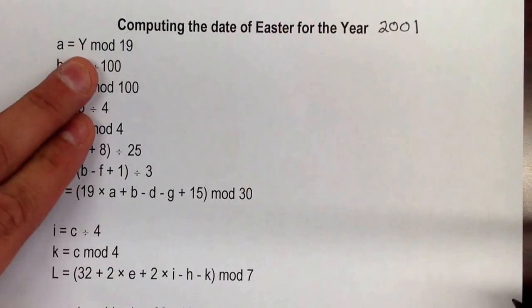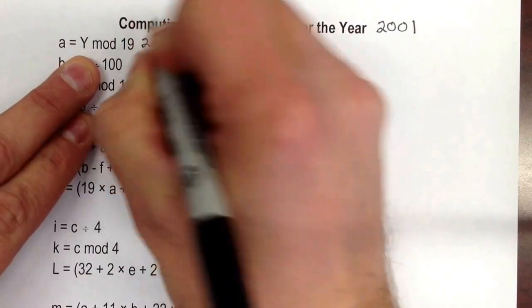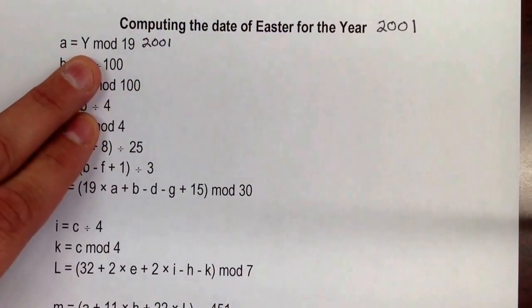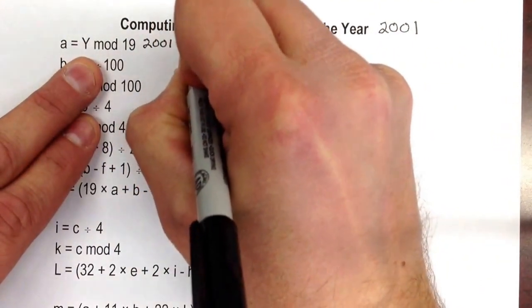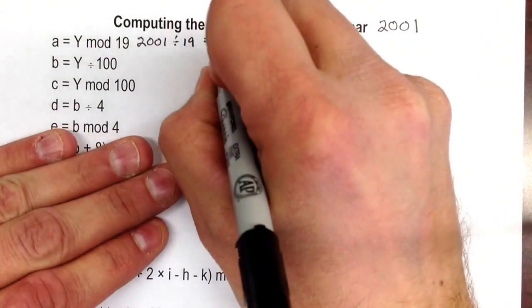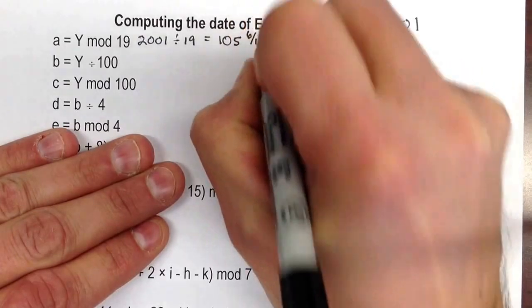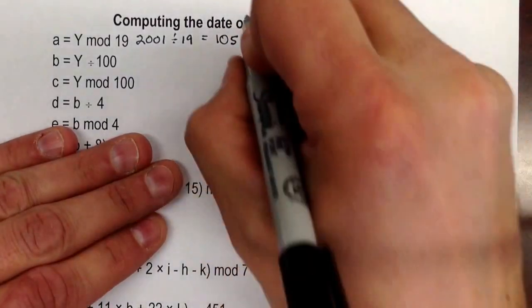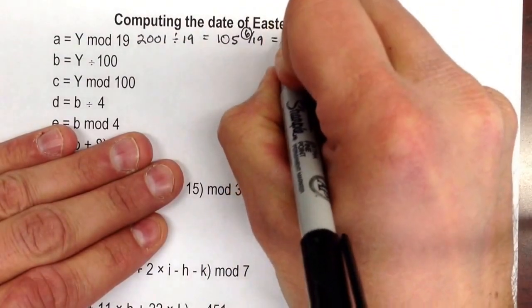We'll start with taking y, which is the year, and we're going to mod 19. That means divide it by 19 and take the remainder. So divide by 19, and that is going to be 105, and use your calculators with the fraction mode to help with this, and 6/19, and what we want there is the 6. So a equals 6.